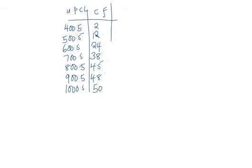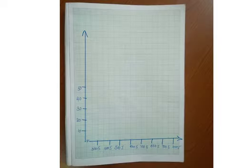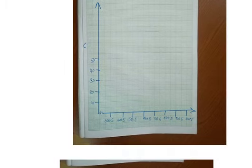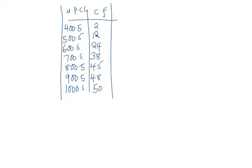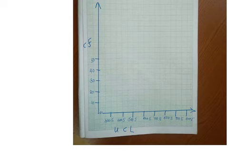Now we are supposed to plot a graph of cumulative frequency against the upper class limit. On the y-axis we'll have the cumulative frequency, and on the x-axis we'll have the upper class limit. We start with a zigzag because we are not starting from 0 on the class limit. My scale is 2 centimeters to represent 10 for cumulative frequency and 2 centimeters to represent 100 for the upper class limit.